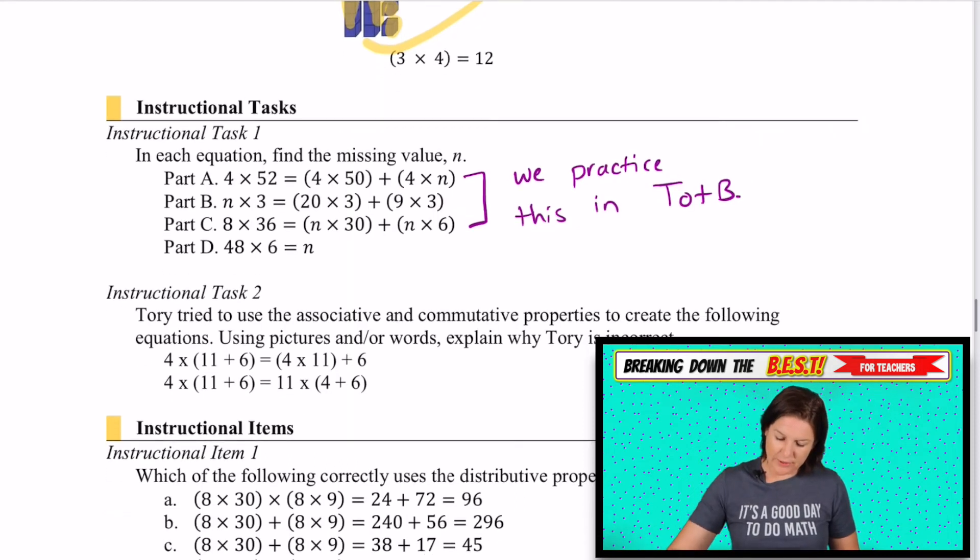Right here. I wanted to point out that this instructional task item that they give you, these are just kind of sample problems. So you can wrap your head around what it might look like in action. And for this one, we're finding the missing value of N. So they're plugging in ends in any position and you have to use your knowledge of the distributive property to figure out what is that missing value.